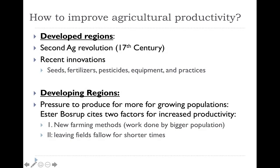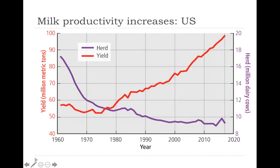If we look at developing regions, there's been pressure to produce more and more food because of growing populations. Geographer Esther Boserup cited two factors for increased productivity: number one is new farming methods — the work being done by a bigger population will hopefully produce more farming methods; and number two is leaving fields fallow for shorter times, allowing fields to rejuvenate and get nutrients back but shortening the fallow period. We've been able to start increasing productivity — for example, dairy cattle herds have decreased from 1960 to today while yield has actually gone up, producing more milk from fewer animals.